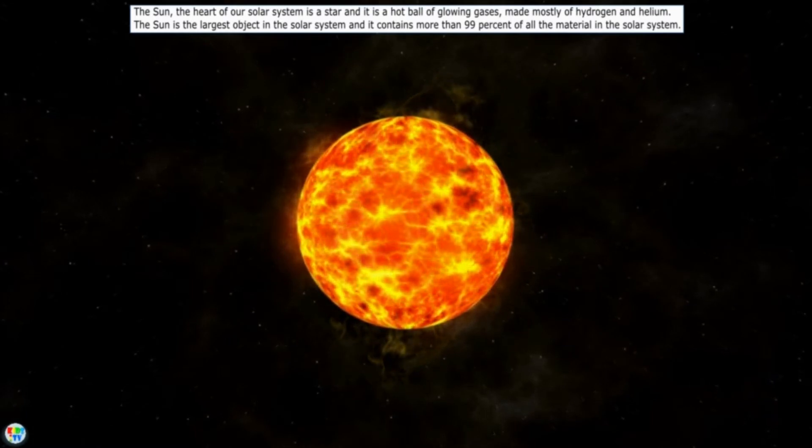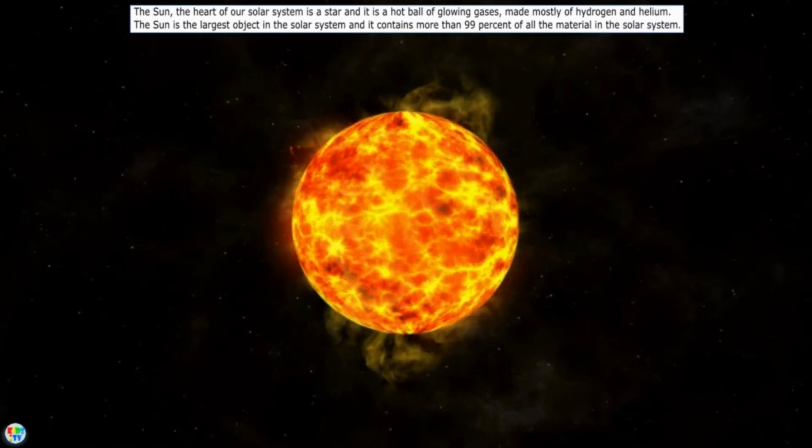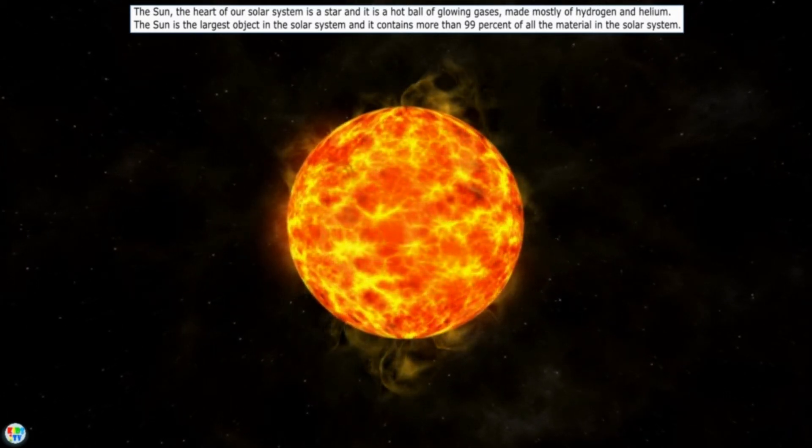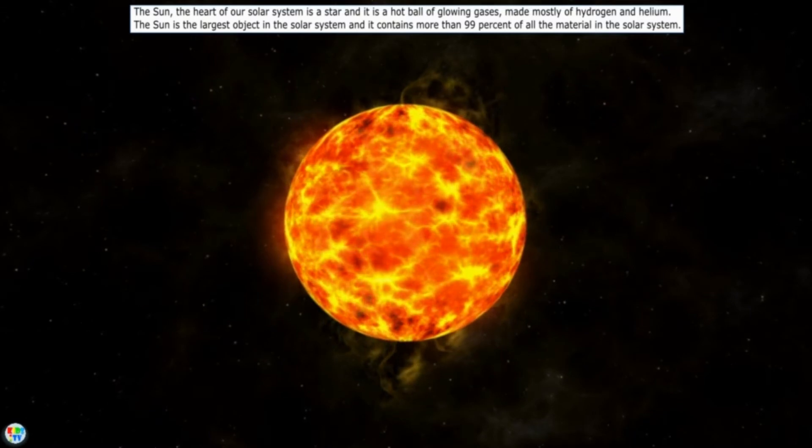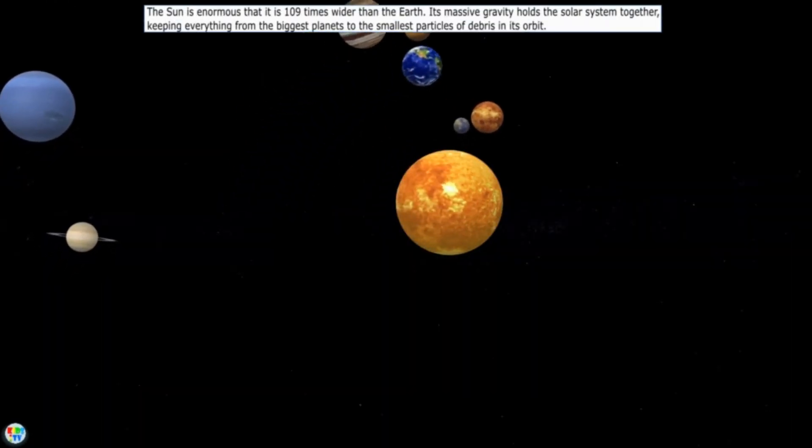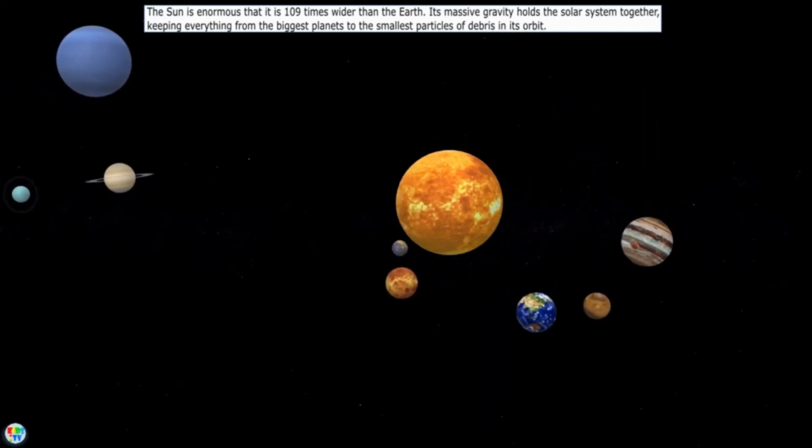The Sun, the heart of our solar system, is a star and it is a hot ball of glowing gases made mostly of hydrogen and helium. The Sun is the largest object in the solar system and it contains more than 99% of all the material in the solar system. The Sun is enormous, it is 109 times wider than the Earth.